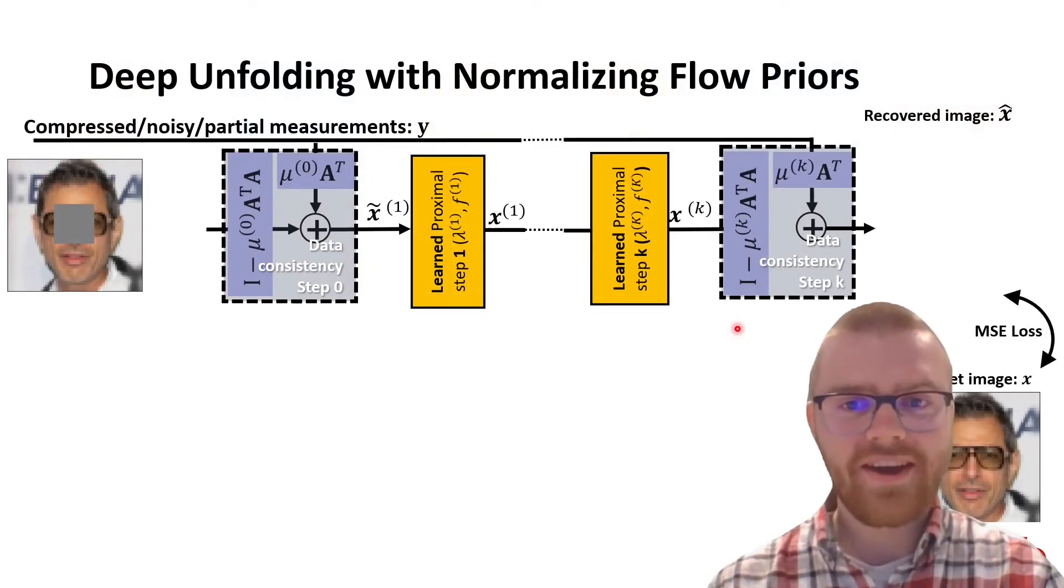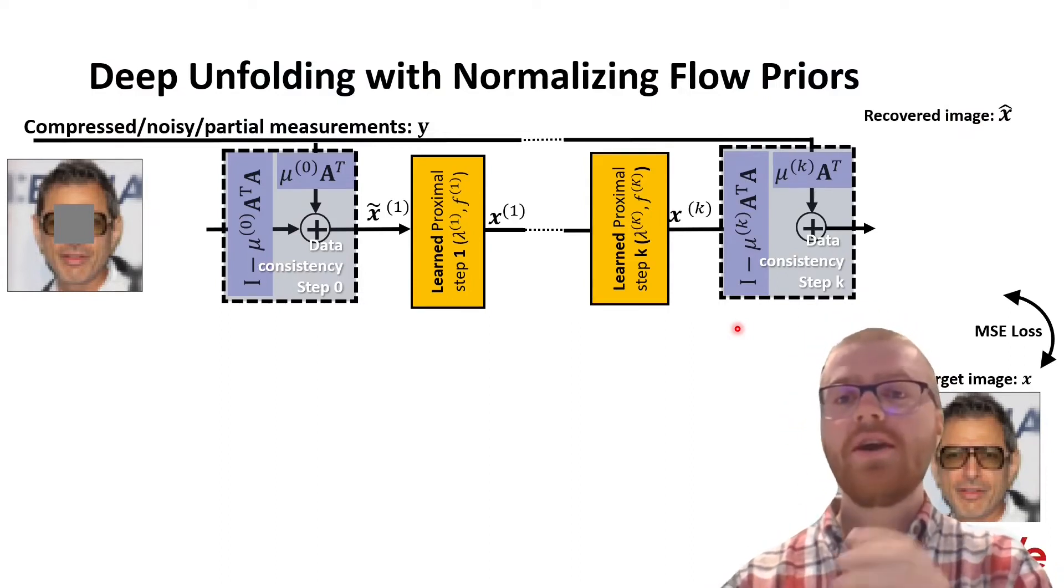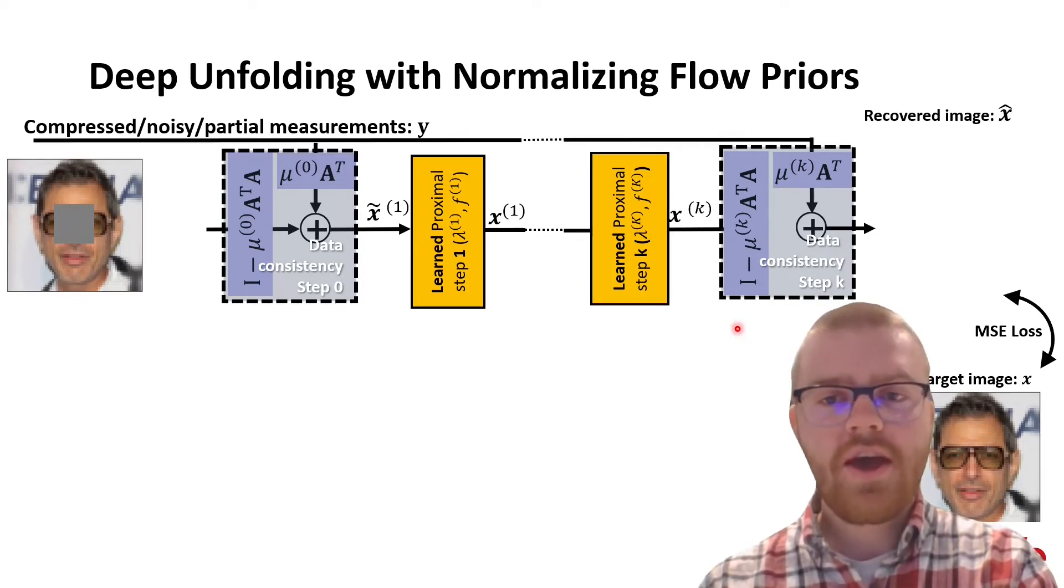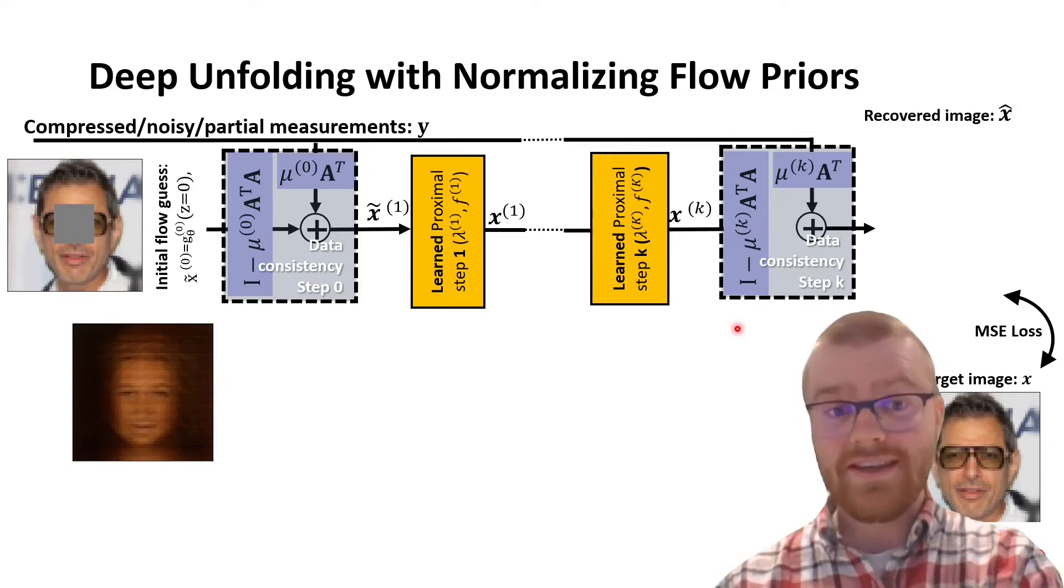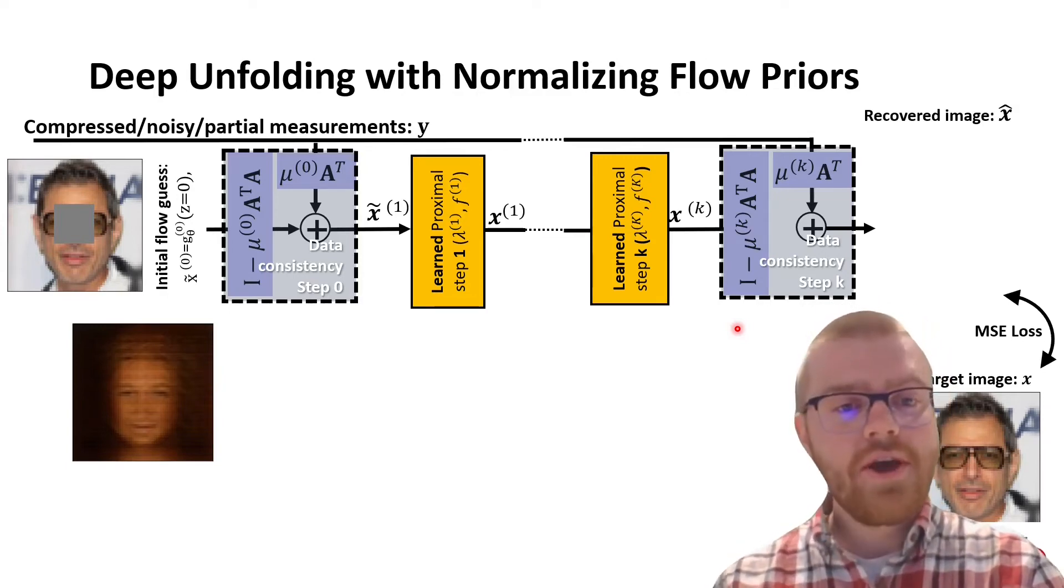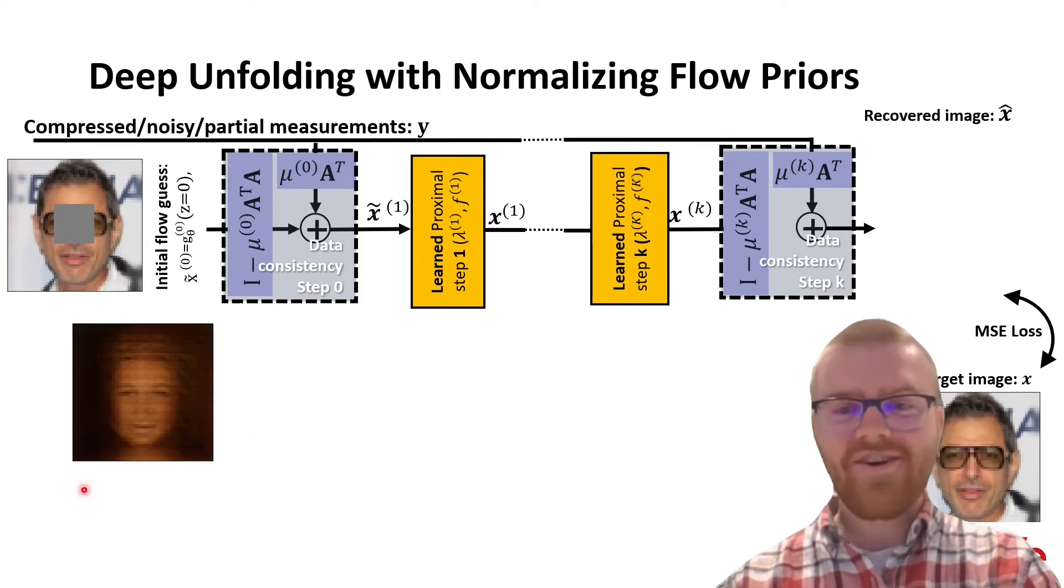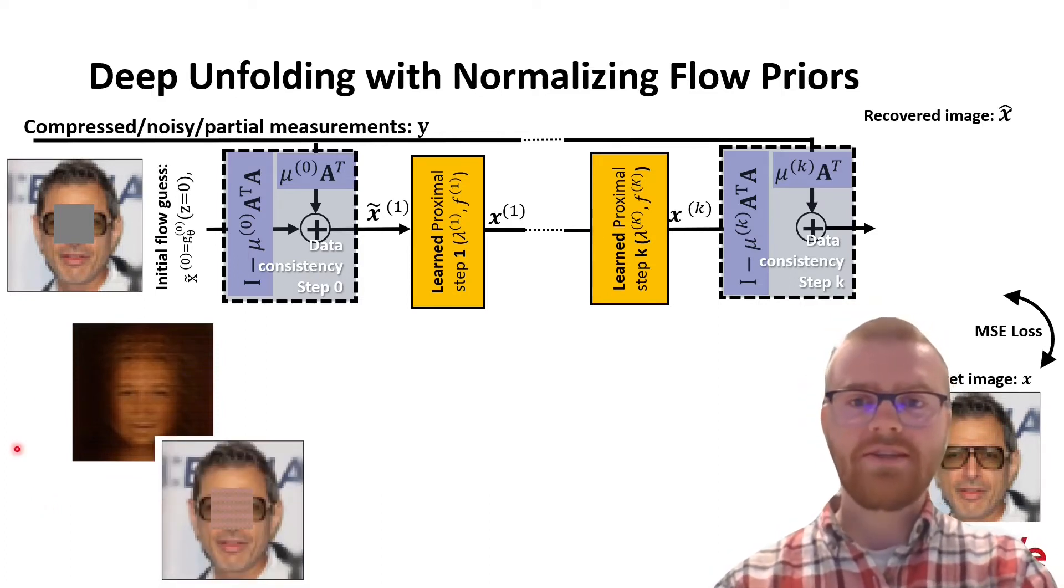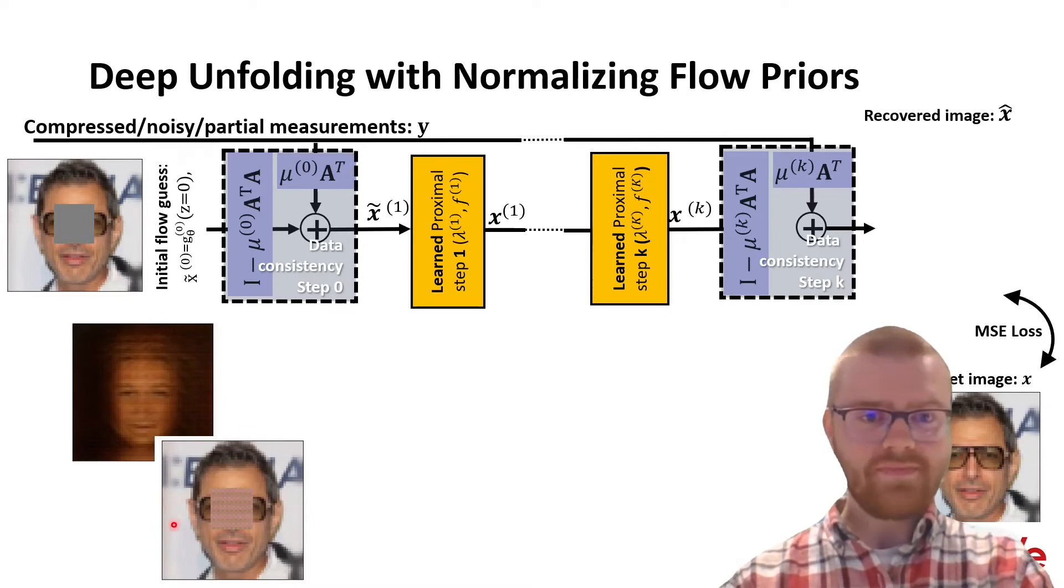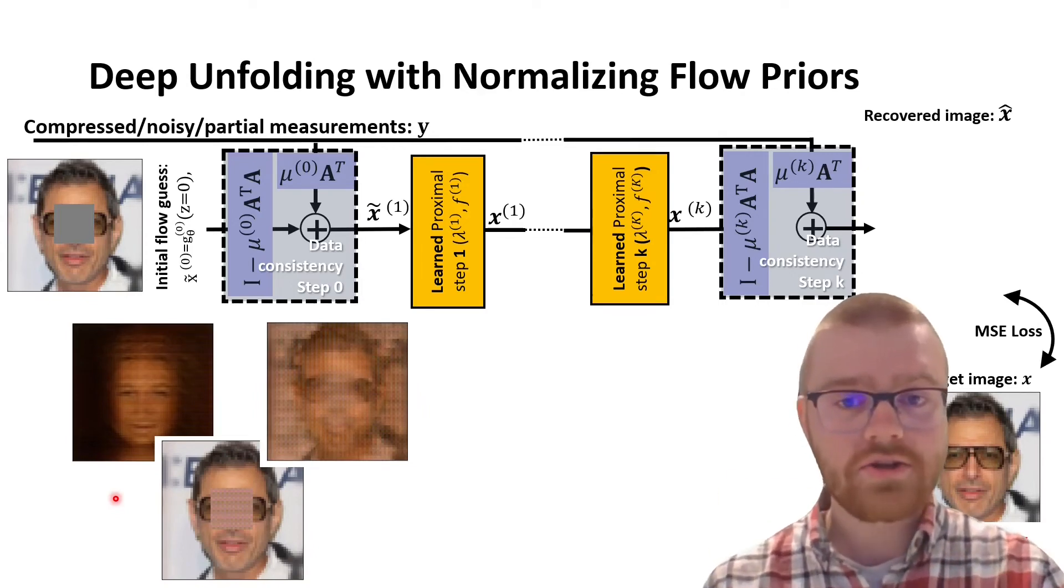What does this look like over several folds? Over here we have the same example. We're missing this central square here of this image. And what we do is we start with an initial guess. Basically, z is zero at our flow, so the origin of the flow. We get this very interesting eigenface here going on. And what we then do is we do a data consistency step. So, we basically mix this image with this eigenface, and then we get this going on.